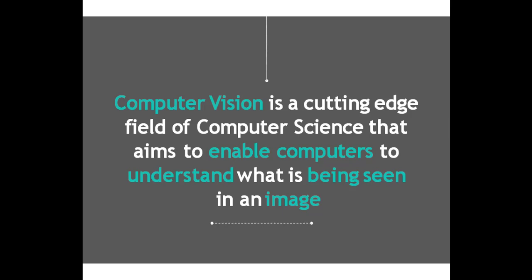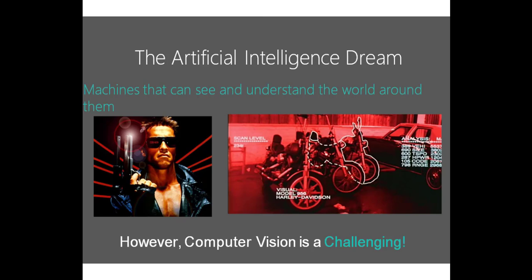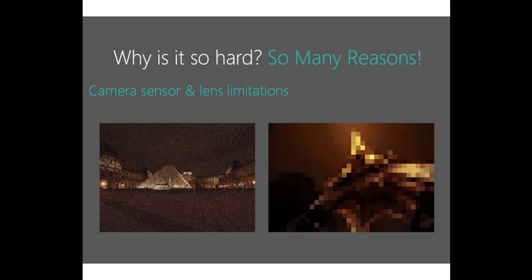Computer vision aims to enable computers to understand what is being seen in an image — an artificial intelligence stream of machines that can see and understand the world around them. However, computer vision is a challenging field today. Why is computer vision a challenging field?